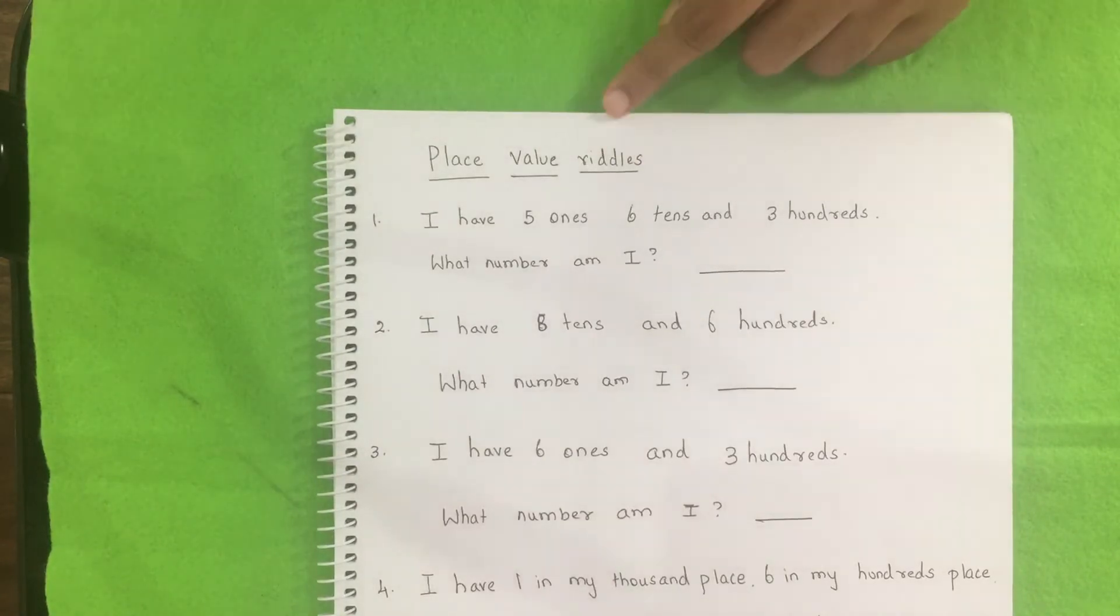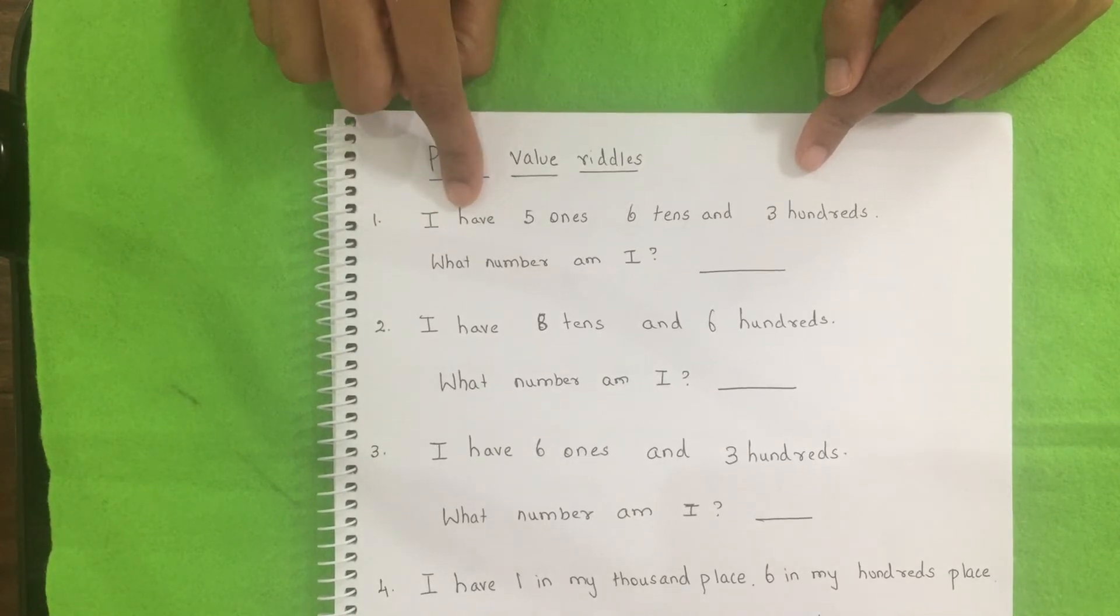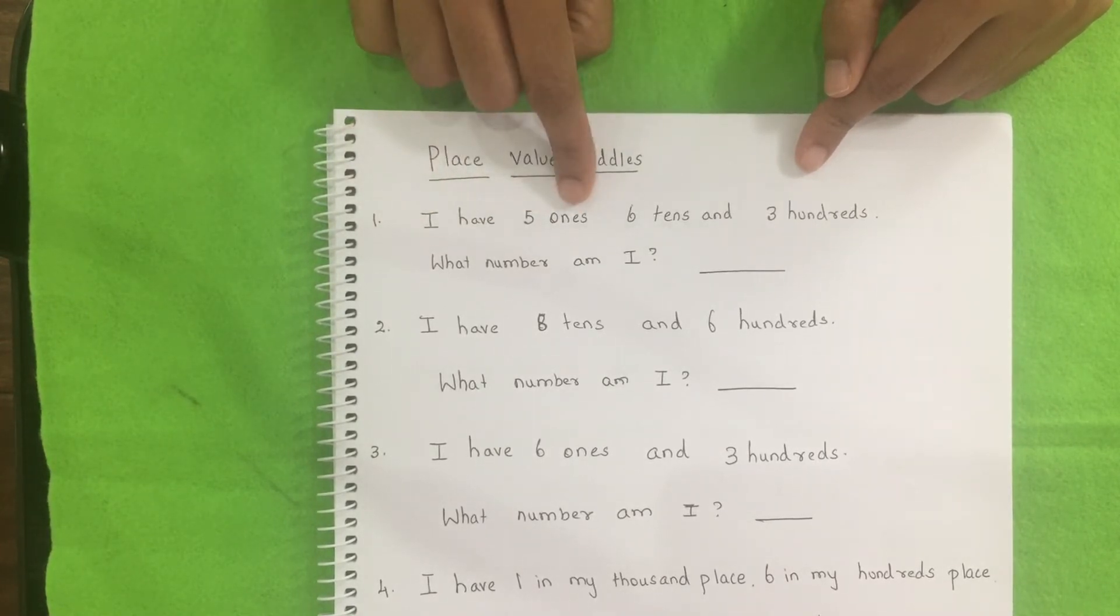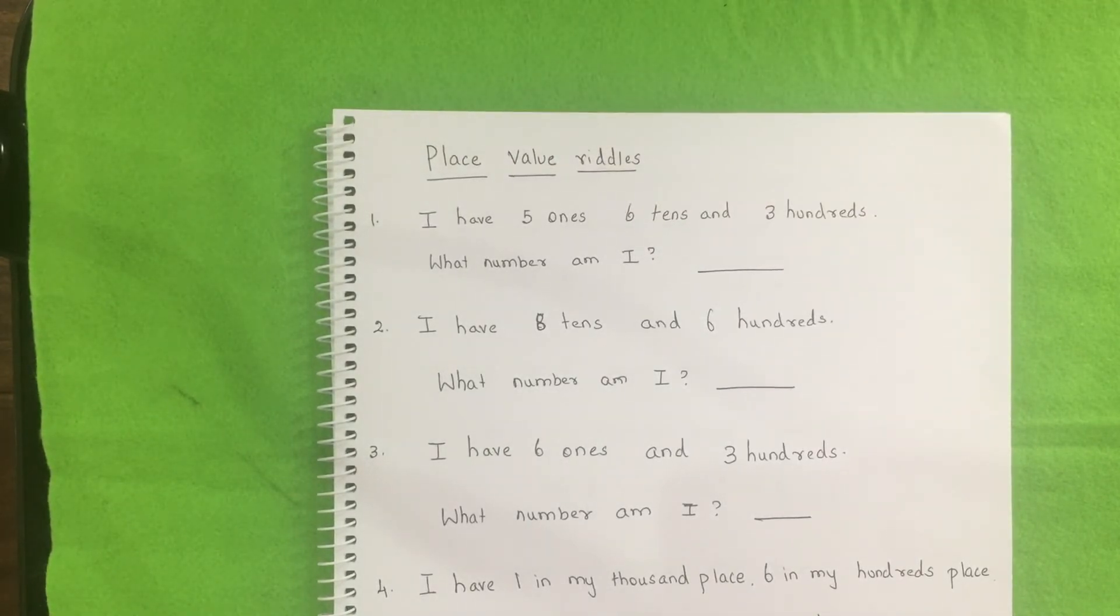So this activity is the place value riddles. So the first one is like, are you ready baby? Yes. I have five ones, six tens and three hundreds. Three hundred and sixty-five. Yeah. Can you write here? Yes. Five.